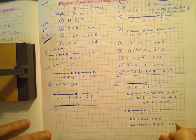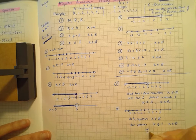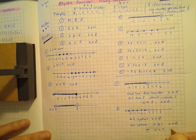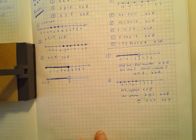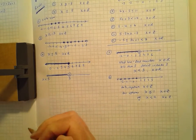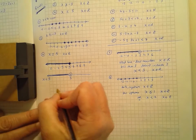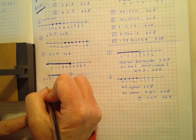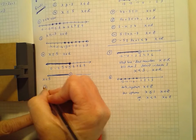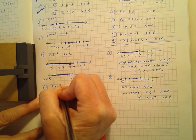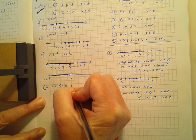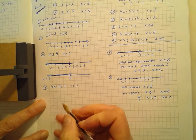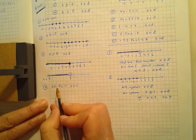Since x is a natural number, I'm thinking of positive whole numbers less than 4. So 3 is included, 2 is included, 1 is included. 0 is not included in natural numbers, and 4 is not included because x is strictly less than 4.